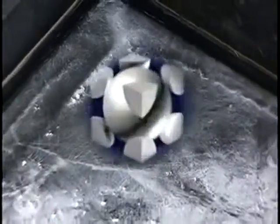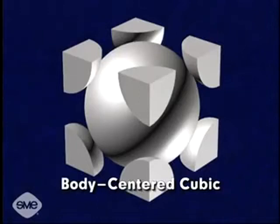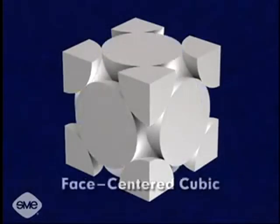The two most common crystal structures in metals are body-centered cubic and face-centered cubic.